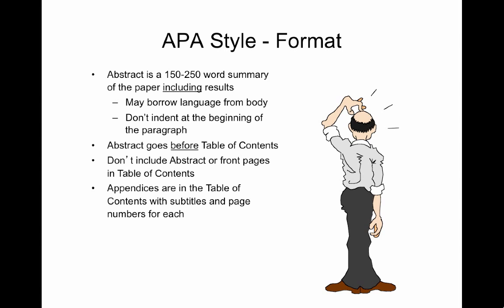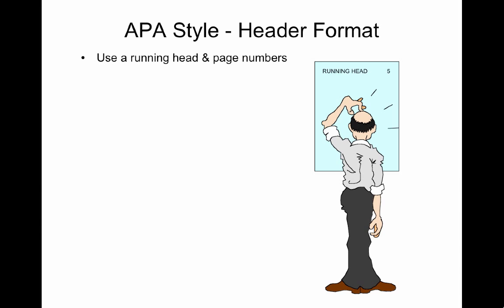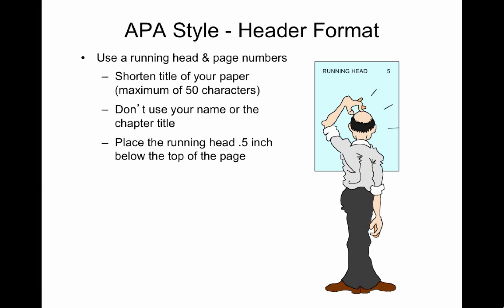Include a list of tables and a list of figures on two separate pages after the table of contents. If there is only one, just say table or figure rather than list of tables or list of figures. Use a running head and page numbers on each page. Shorten the title of your paper — it should be a maximum of 50 characters. Don't use your name or the chapter title. Place the running head a half an inch below the top of the page. On the first page only, use running head colon and then the title of your running head. Place the short title flush left and in all uppercase.